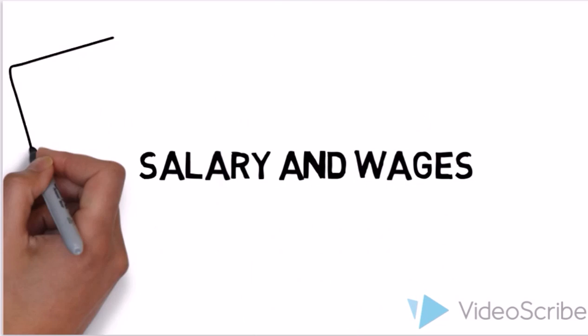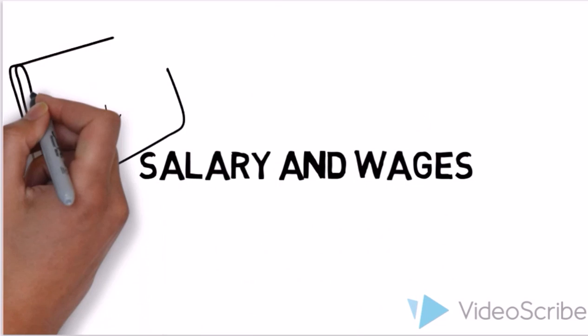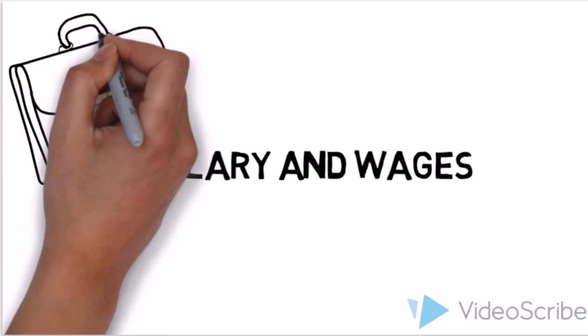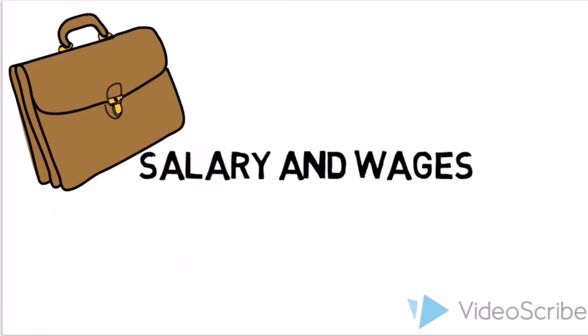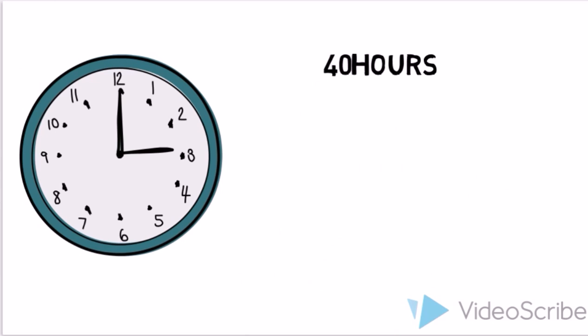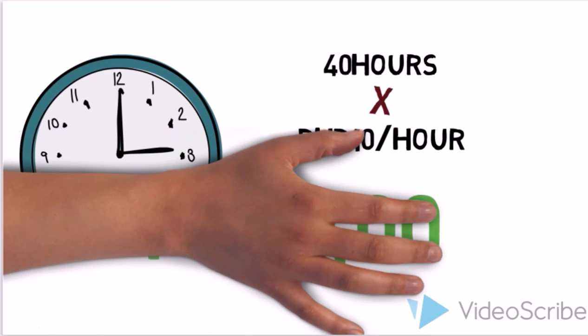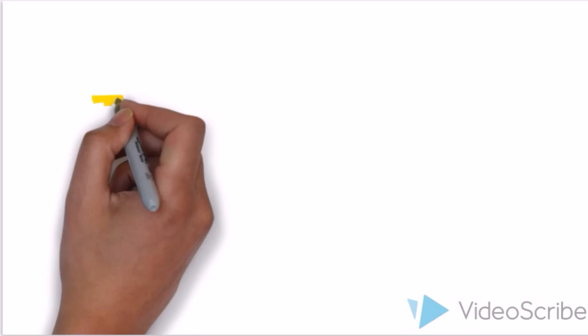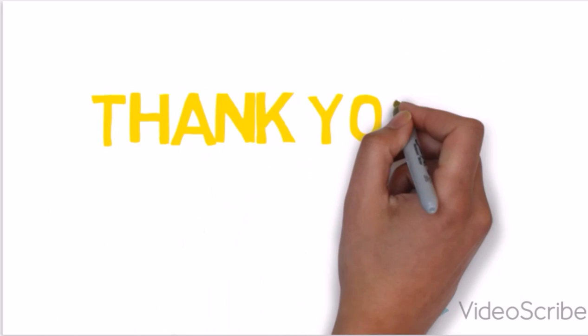When it comes to salary and wages, many employees are paid on an hourly basis. To compute for the pay, we'll simply multiply the number of hours worked by the hourly rate. For example, if an employee worked for 40 hours during the week and his or her rate is 10 pesos per hour, his wage is 40 hours times 10 pesos divided by hour, which is equal to 400 pesos.